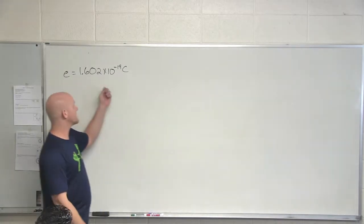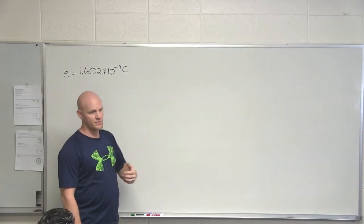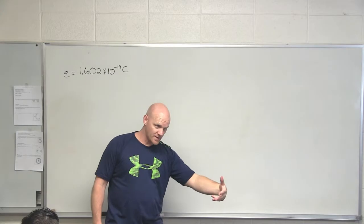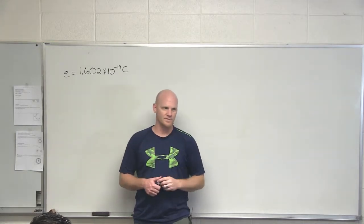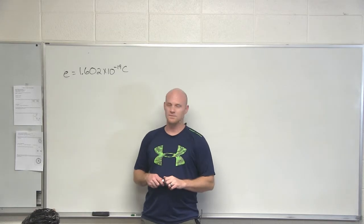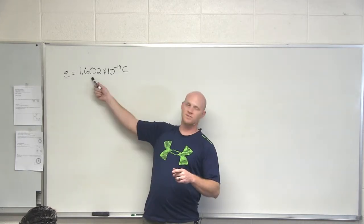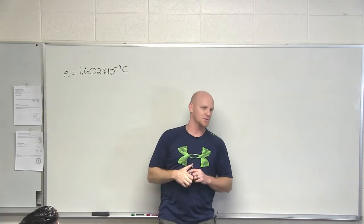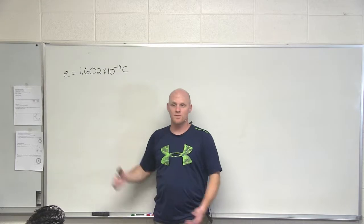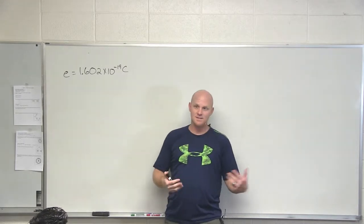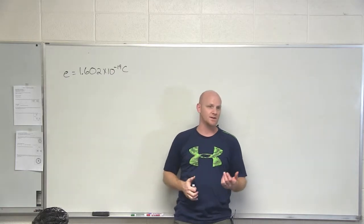The charge on an electron is 1.602 times 10 to the negative 19 Coulombs. If you had 10 excess electrons, what charge would that object have? 1.602 times 10 to the negative 18 Coulombs. If you had an extra million, 10 to the 6th electrons, multiply this by 10 to the 6th and you end up with 1.602 times 10 to the negative 13 Coulombs.